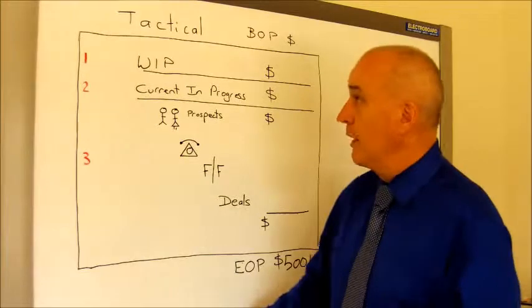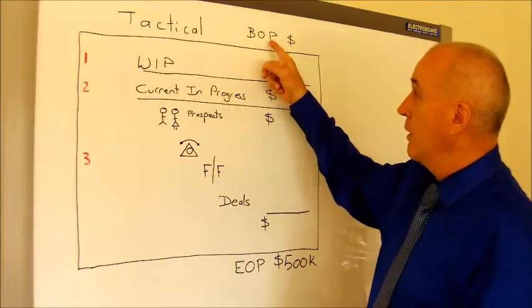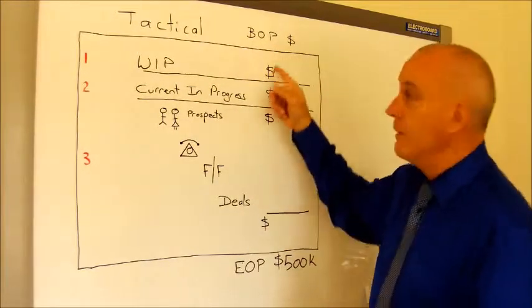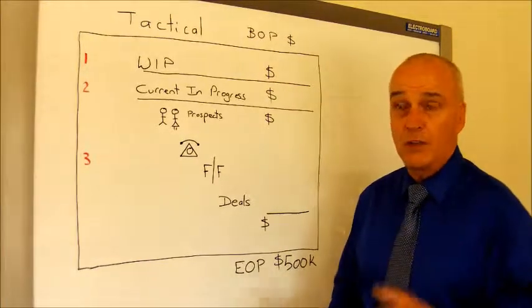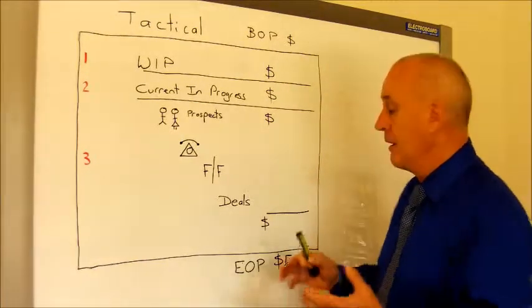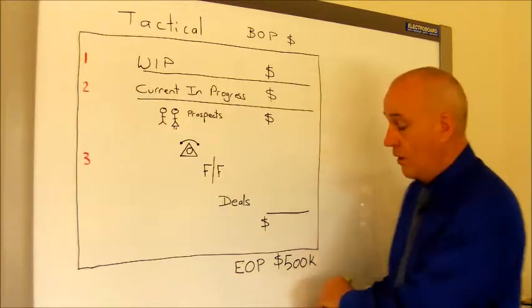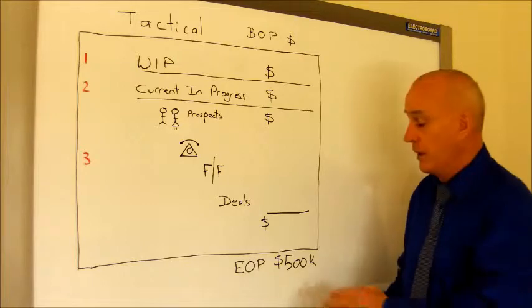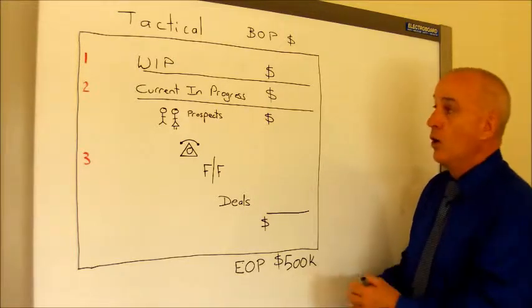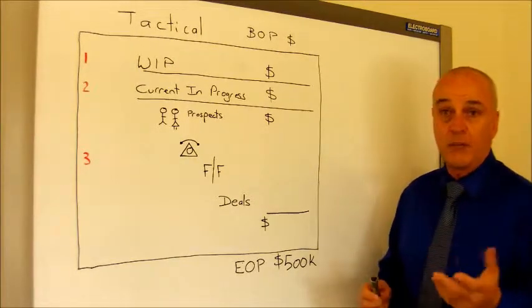In this example here, we've got the tactical beginning of the plan, and down here we're at the end of the plan. At the end of the plan, we've got a target of $500,000 that we want to be achieving as our sales target. So at the beginning of the plan,